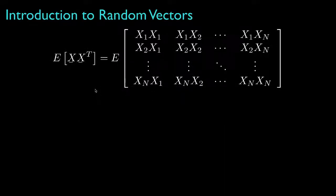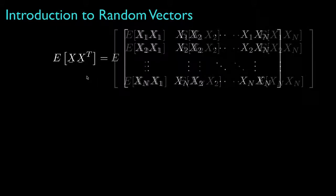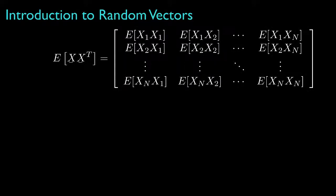Another important quantity is the second moment for the random vector, which is the expected value for the outer product of the vector with itself. This matrix contains the expected values for the product of all possible pairs of the random variables that make up the vector, and the resulting matrix is called the autocorrelation matrix, or sometimes simply the correlation matrix.